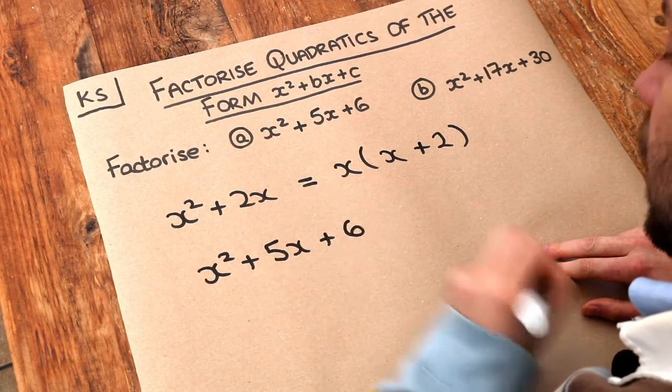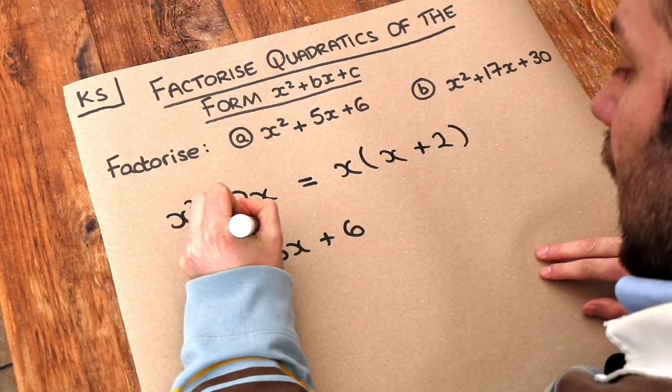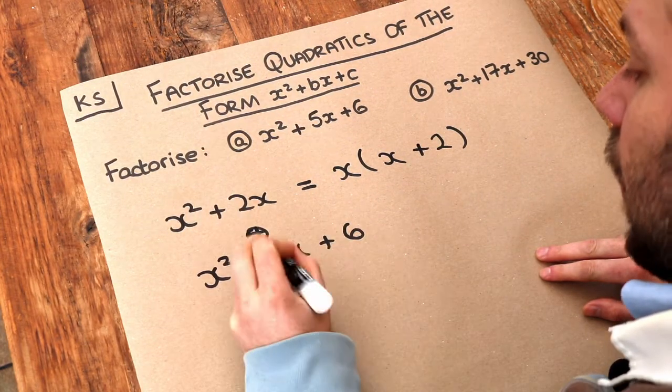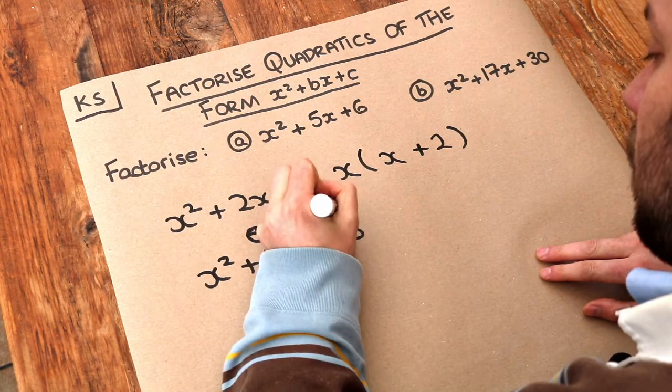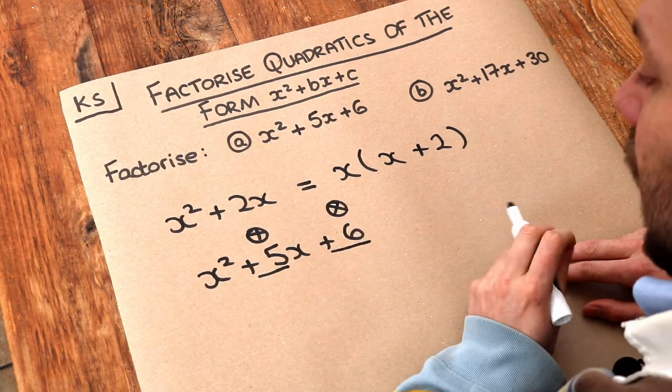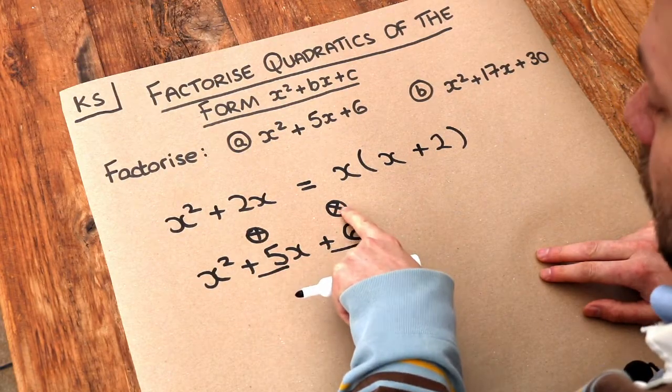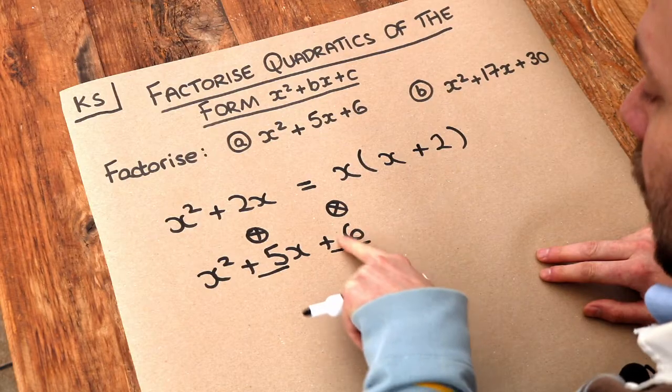We just need to find two numbers which add to give this number here in front of the x. So they add to give the plus 5 and they multiply to give the plus 6. So they add to give the number in front of the x in the middle and they multiply to give this last number on its own at the end.